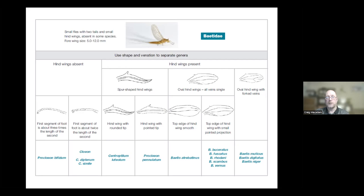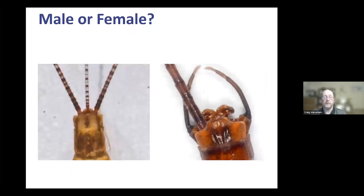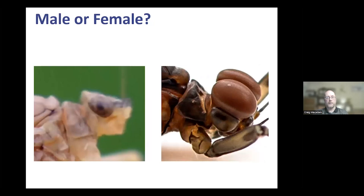The first step in identification is determining whether it's a male or female. Males have forceps — appendages lying underneath the tails — used to grab the female during mating, plus penes of various shapes. Females simply have the end of the abdomen and tails, with no those features. You can also look at the eyes: female eyes are quite small, but males either have extra turbinate eyes on top, or very large eyes on the top of the head.